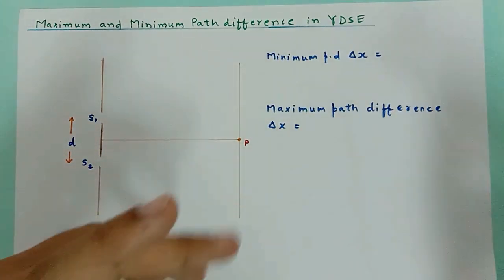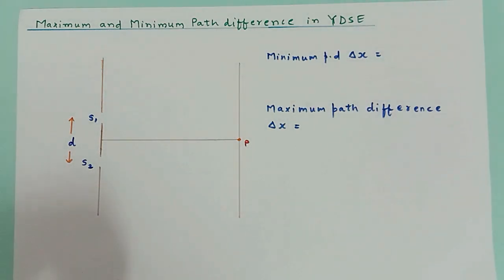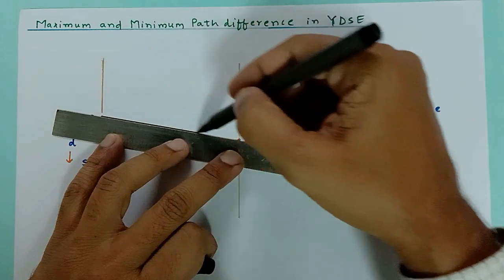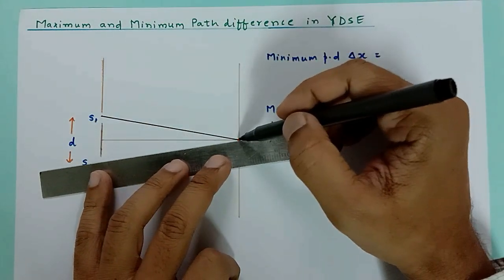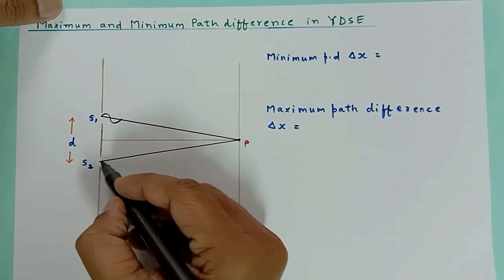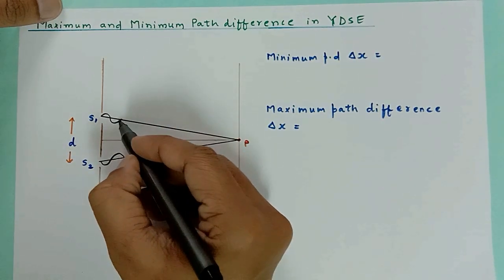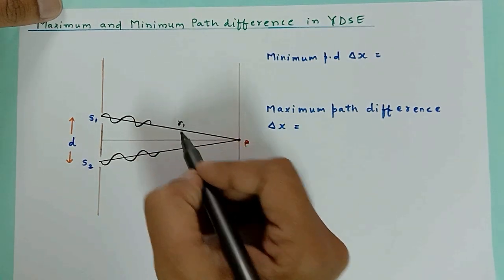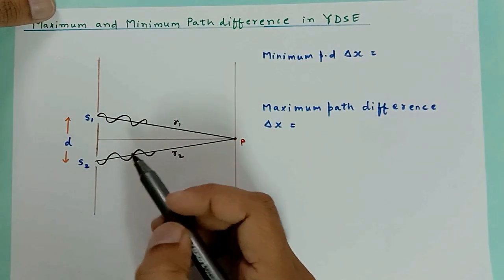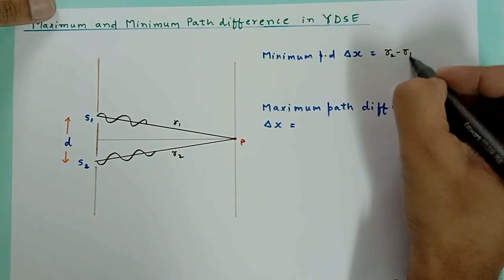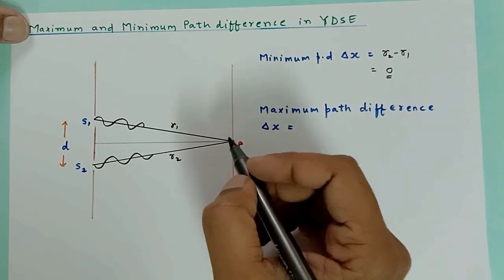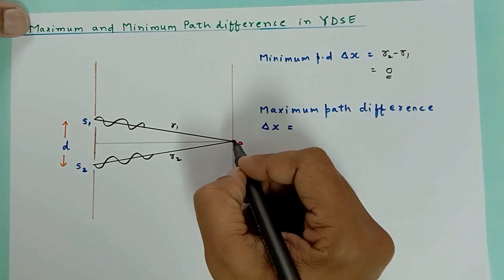Let us find out what is the minimum and maximum path difference. Suppose the light waves from S1 meet at point P with the waves coming from S2. They travel distances R1 and R2 and meet at point P. Since R1 and R2 are the same, path difference R2 minus R1 equals 0, which is the minimum path difference. At this point, since path difference is 0, it is a bright fringe — the central bright fringe.